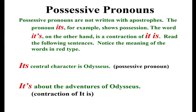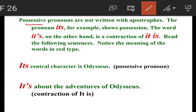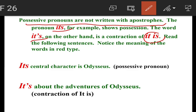Possessive pronouns are not written with apostrophes — this is very important. The pronoun its without an apostrophe shows possession. On the other hand, it's with an apostrophe is a contraction of it is.